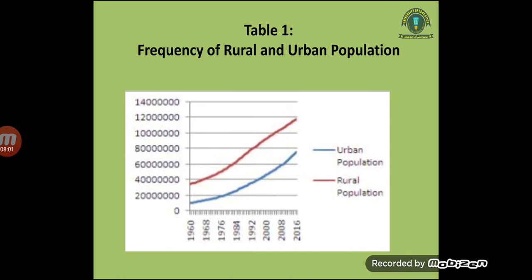If you see the chart, it basically shows the frequency of the population. You can see that the blue line does not progress too much, but the red line shows rapid progress in the population. The blue line represents the urban population and the red line represents the rural population. I hope now you can understand the frequency of the rural and urban population.